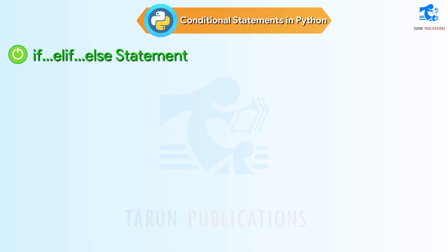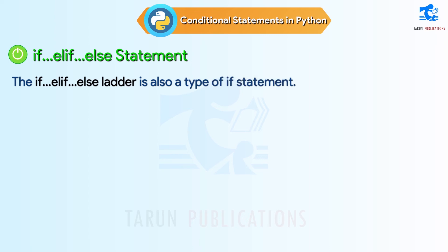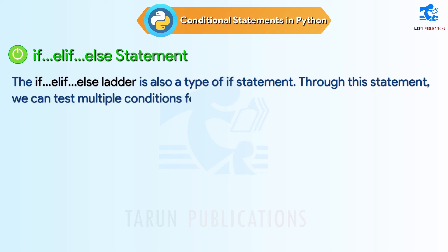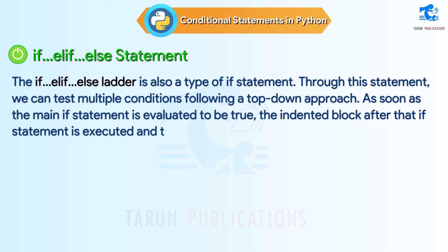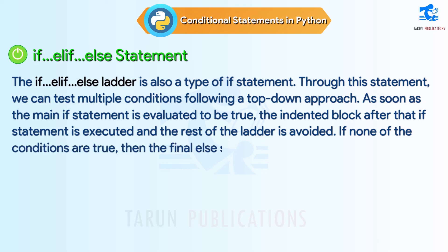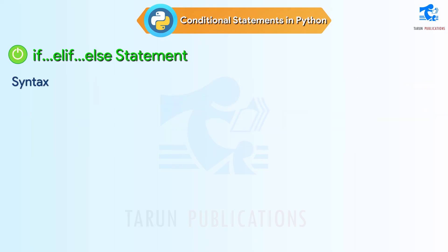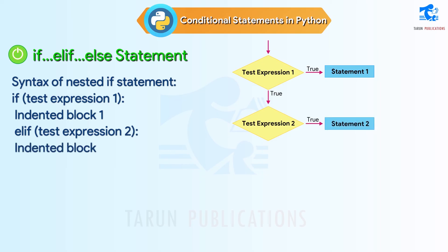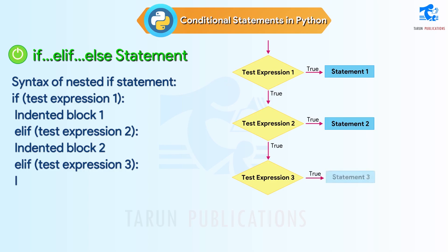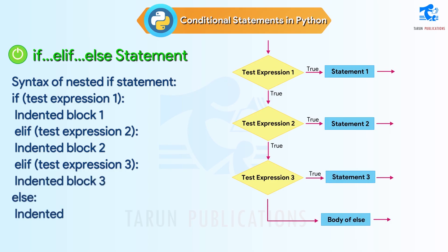If-elif-else statement: The if-elif-else ladder is also a type of if statement. Through this statement, we can test multiple conditions following a top-down approach. As soon as the main if statement is evaluated to be true, the indented block after that if statement is executed and the rest of the ladder is avoided. If none of the conditions are true, then the final else statement is executed. Syntax: if test expression 1, indented block 1; elif test expression 2, indented block 2; elif test expression 3, indented block 3; else, indented block 4.